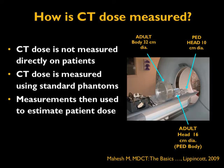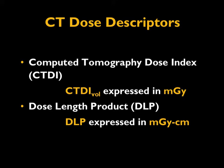In the previous lecture we saw how CT dose is measured. CT dose is not measured directly on patients — it is measured using standard phantoms. The large 32-centimeter diameter water-equivalent lucite phantom is called the body phantom, and the 16-centimeter diameter lucite phantom is called the adult head phantom. Physicists use these standard phantoms to measure the scanner output, from which CTDIvol and other quantities are derived, and then used to estimate patient dose.